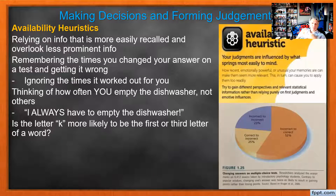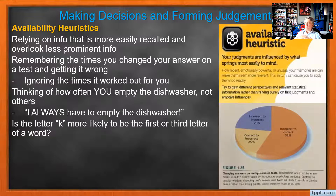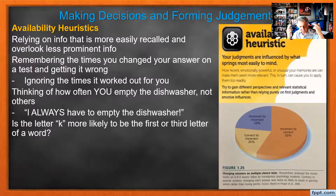Then we have the availability heuristic — when we rely on information that's kind of the loudest to us. We talked about this before: when you change your answers on a test, you remember more often the times you changed from right to wrong, because that hurt. You ignore all the times you changed from wrong to right. When your parents ask you to empty the dishwasher, you think 'I always have to do this' — but they haven't asked in two weeks. Since you don't like doing it, those times seem more recent than they really were.